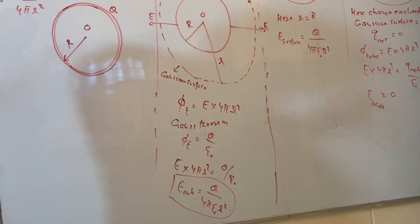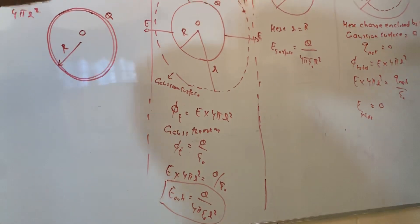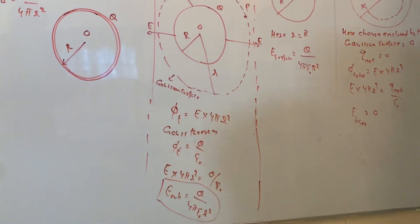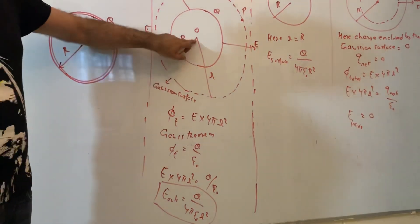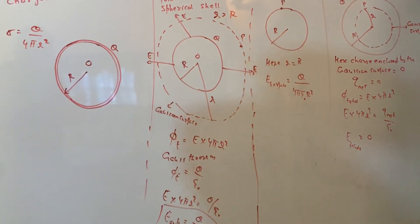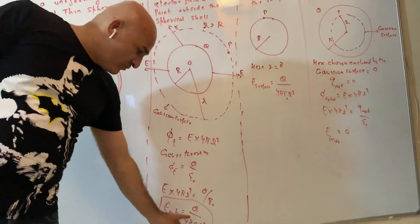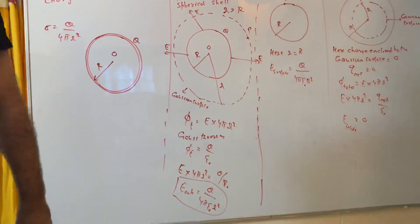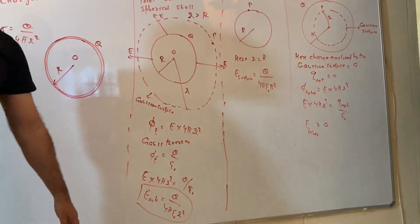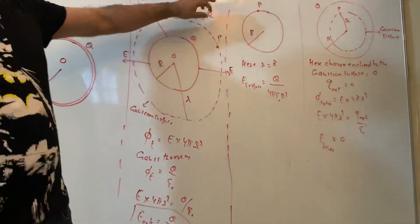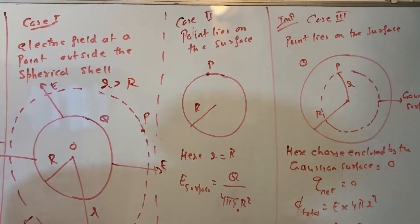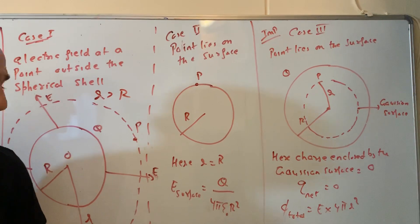Putting it together: E × 4πr² = Q / ε₀, so E outside = Q / (4πε₀r²). For a spherical shell, any point outside behaves as if the whole charge is concentrated at the center. The distance r is measured from the center, not from the surface. This is the same formula as for a point charge.